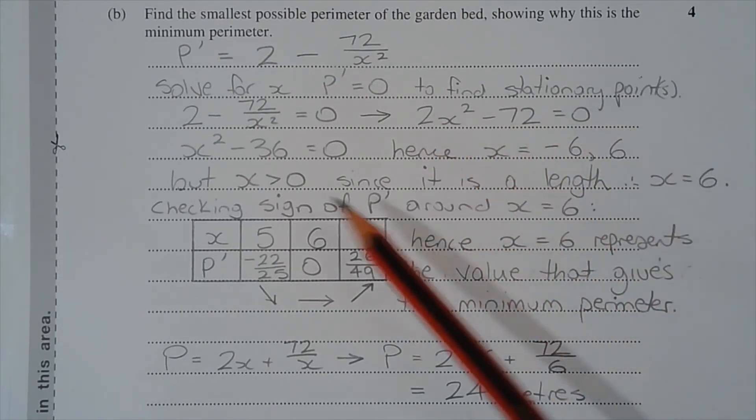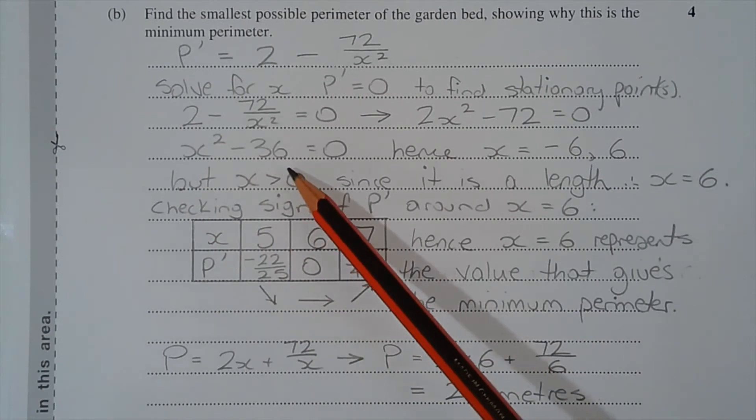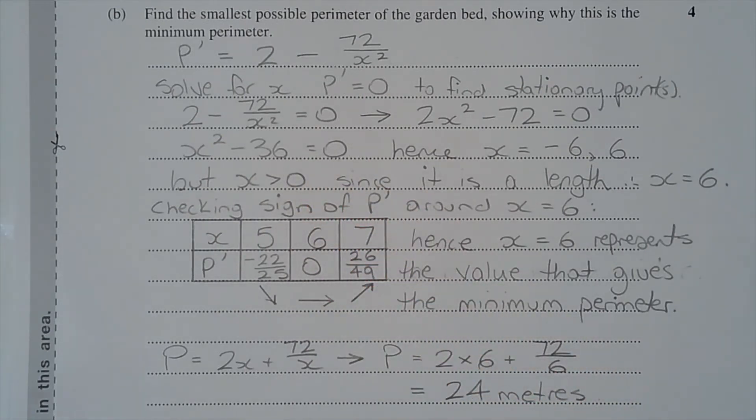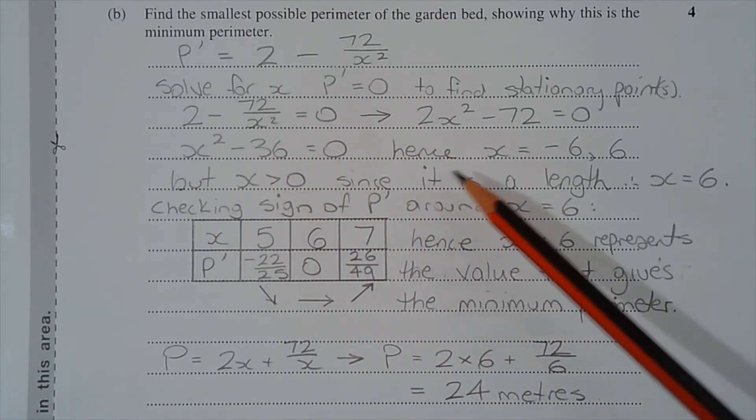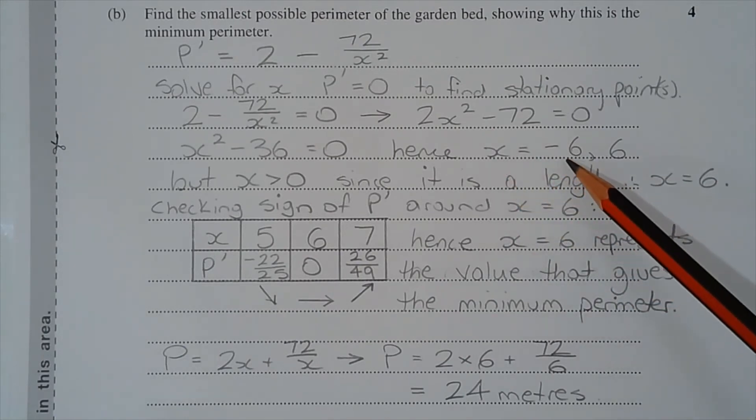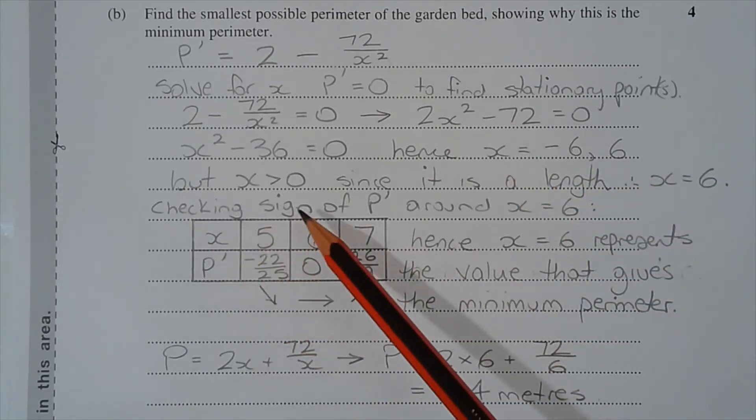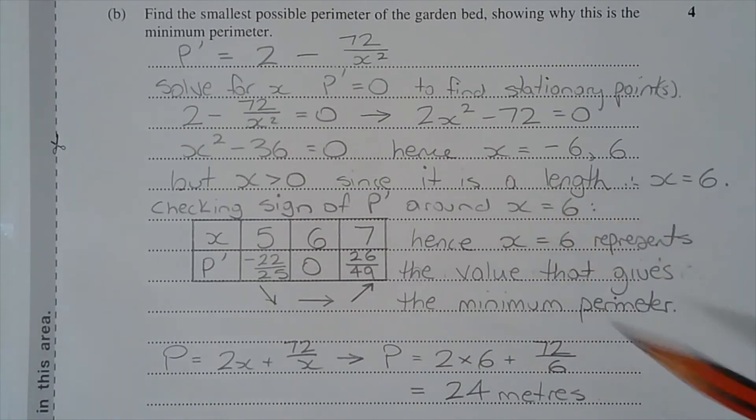Dividing all terms by 2 we get x² minus 36 equals 0, or x² equals 36. And of course the two solutions there are x equals negative 6 or positive 6, but x needs to be positive since it is a length. So therefore x equals 6 is the only valid solution.